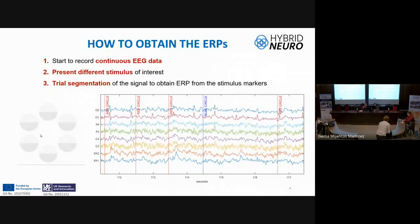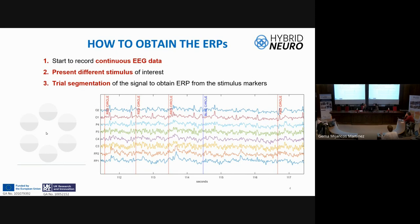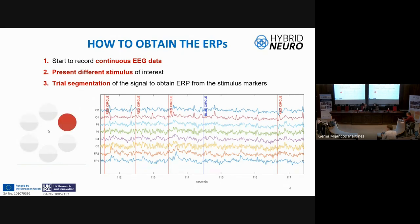To obtain these potentials, we first need to record the signal with a marker at the onset stimulus. In the video, we can see the oddball paradigm, where red circles and blue circles appear, the EEG with eight channels, markers for each event, and then trial segmentation to obtain the event-related potentials.